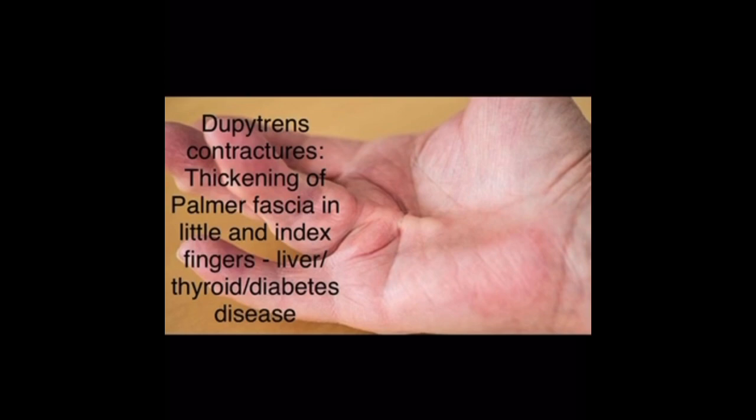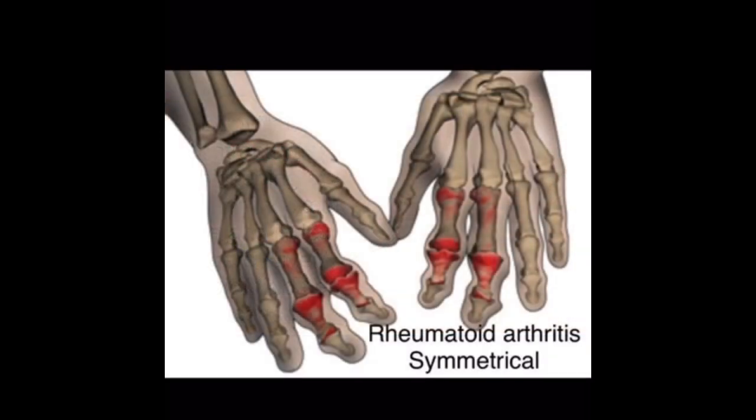This is another condition called Dupuytren's contractures. Dupuytren's contractures can be due to liver disease, diabetes, or thyroid disease. As you can see, the cord indicates the region called the palmar fascia — this thickening of the palmar fascia occurs between the little and index fingers. In this picture, both the left and right hands are affected.